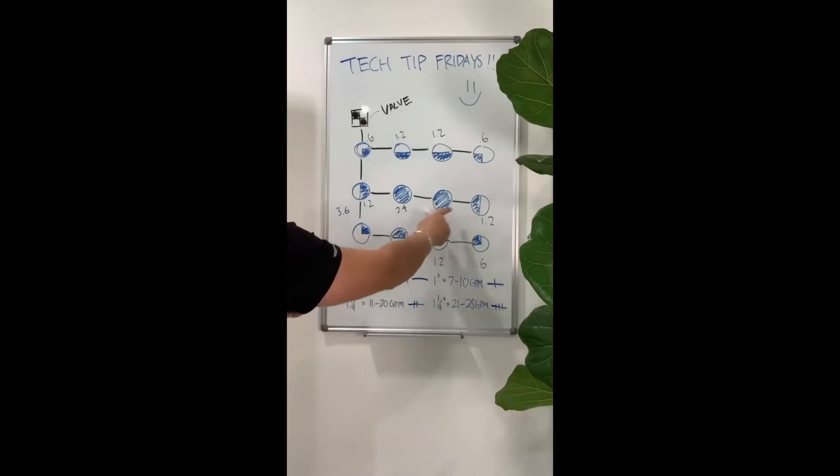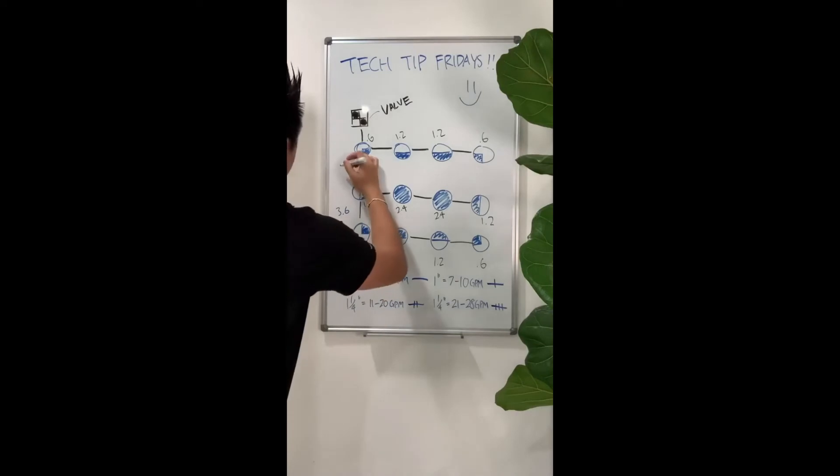Now the next one that we want to calculate is the section in the middle. So we got 1.2 plus 2.4 plus 2.4 plus 1.2. So that's 7.2 GPMs running through this section right here. And being that everything before that is between 1 and 6 GPMs, these are still three-quarter inch. And we take the total of that, which is 7.2 GPMs plus 3.6 GPMs to get this section. So we got about 10.8 GPMs running through this section.